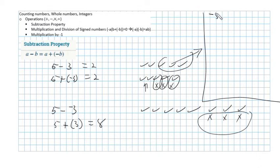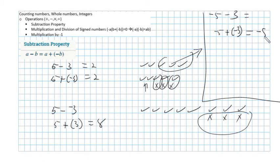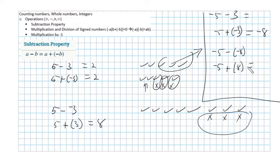The idea is to always be able to change subtraction to addition. For example: minus 5 minus 3 becomes minus 5 plus negative 3, which is minus 8. And minus 5 minus a negative 8 becomes minus 5 plus 8, and you already know then that this is going to be 3.